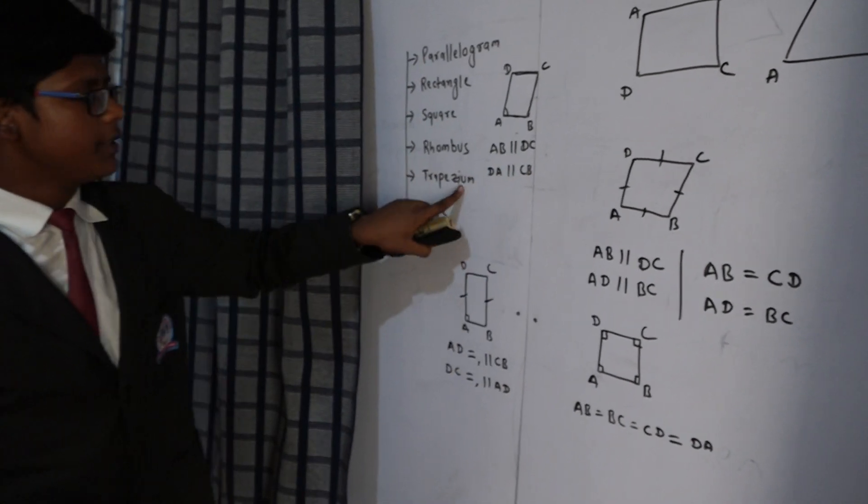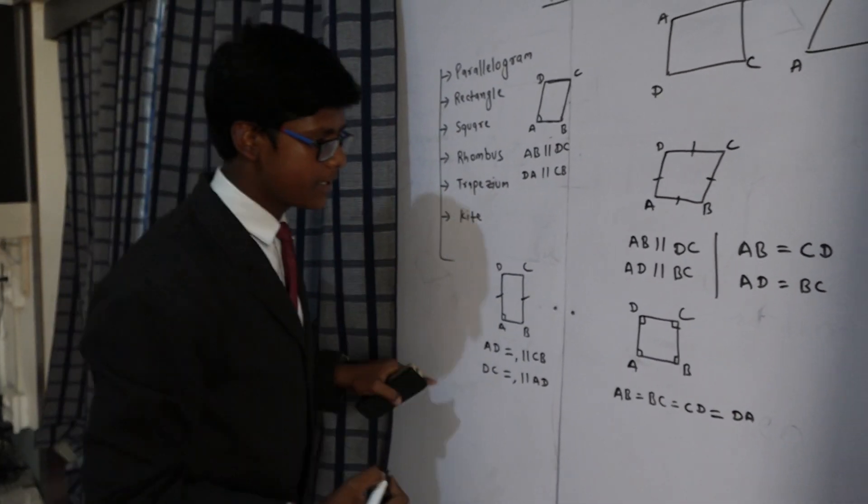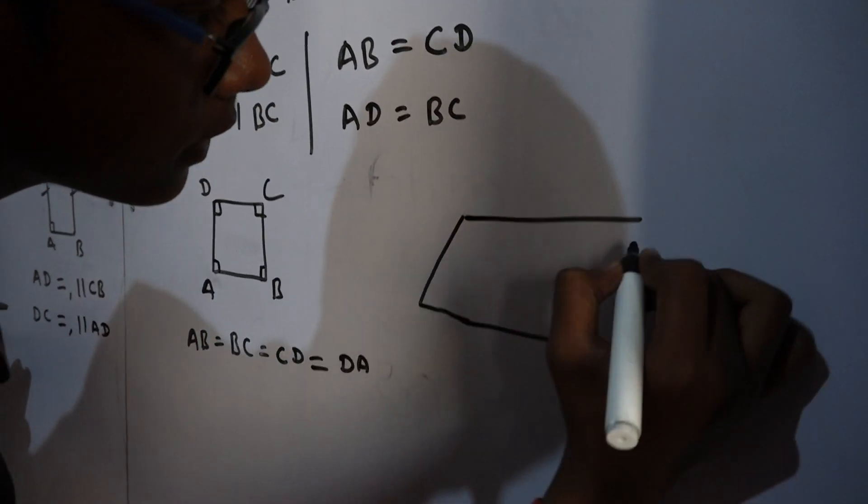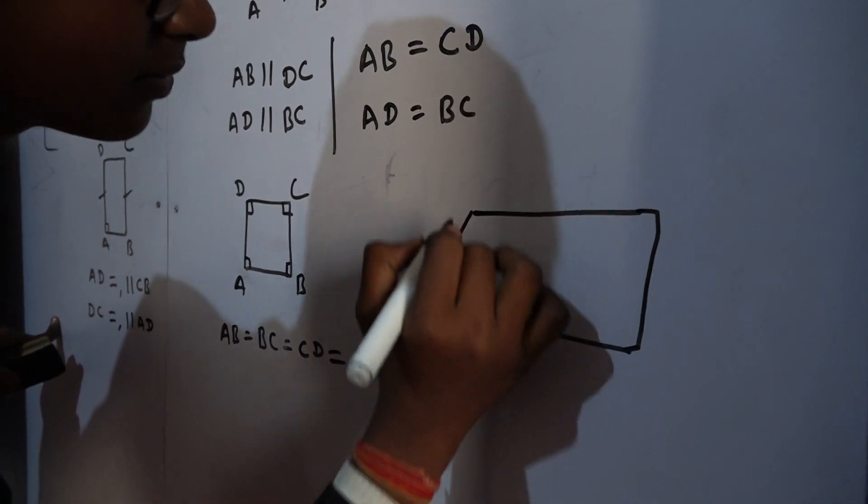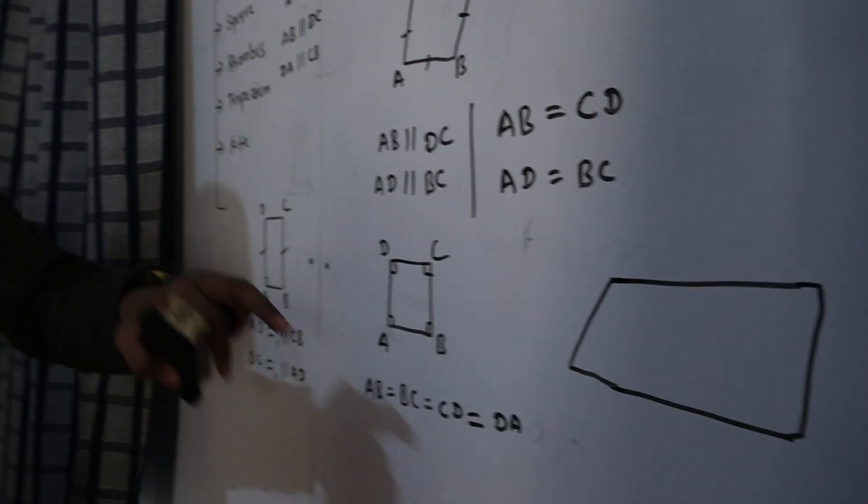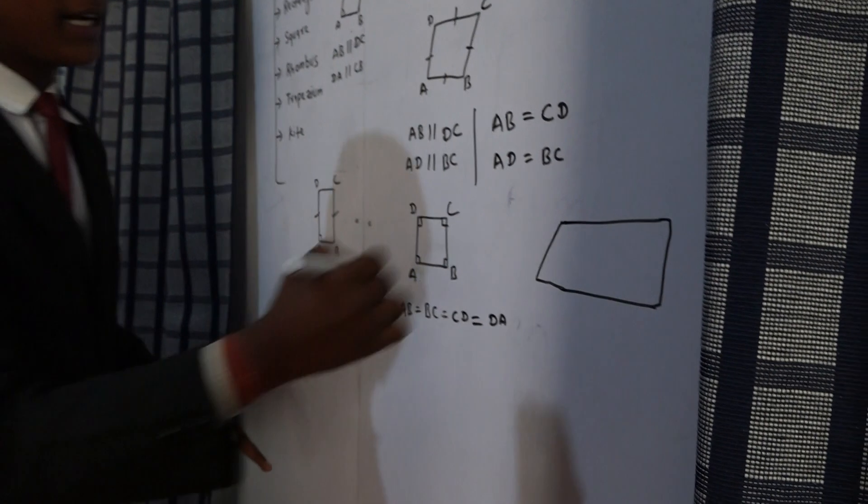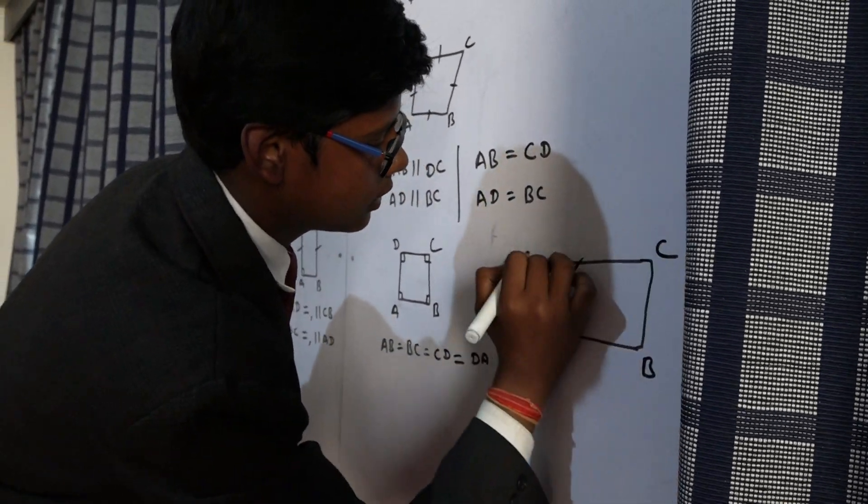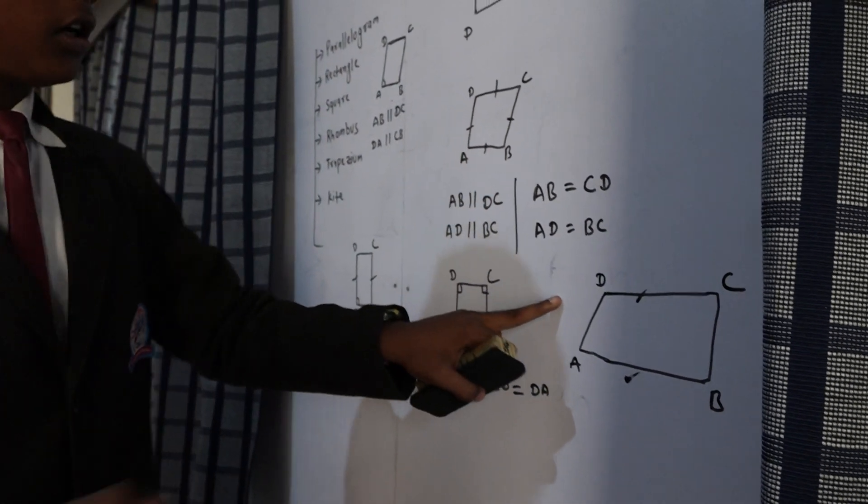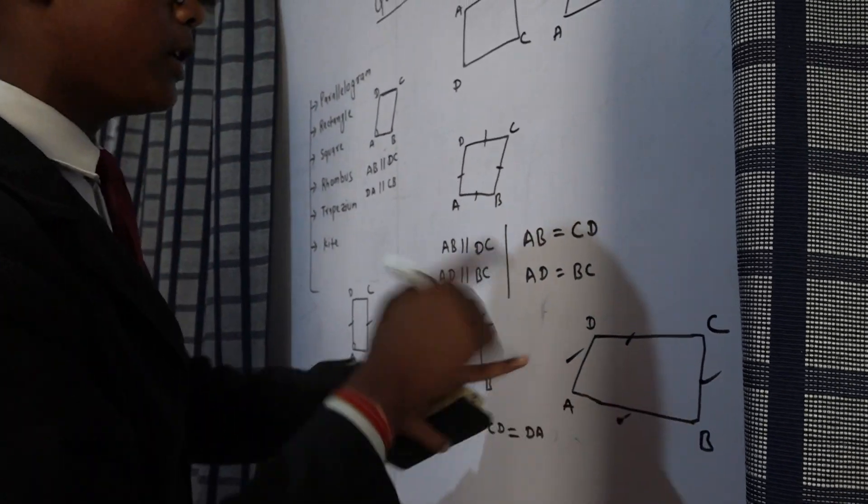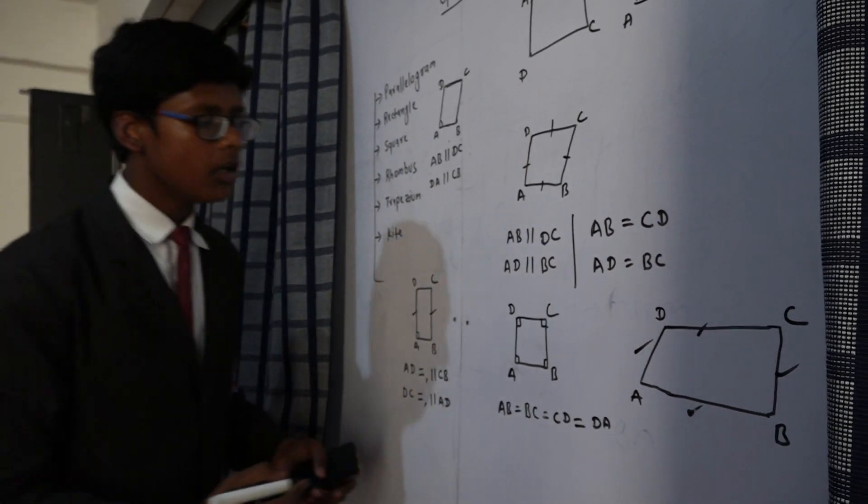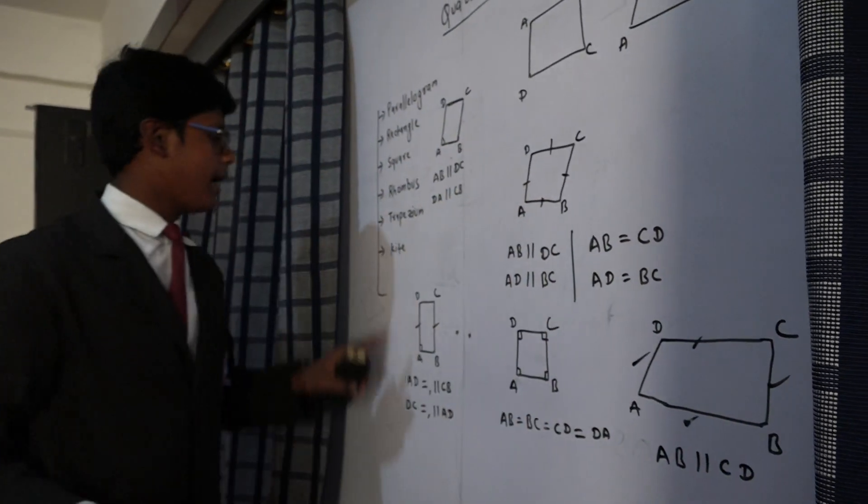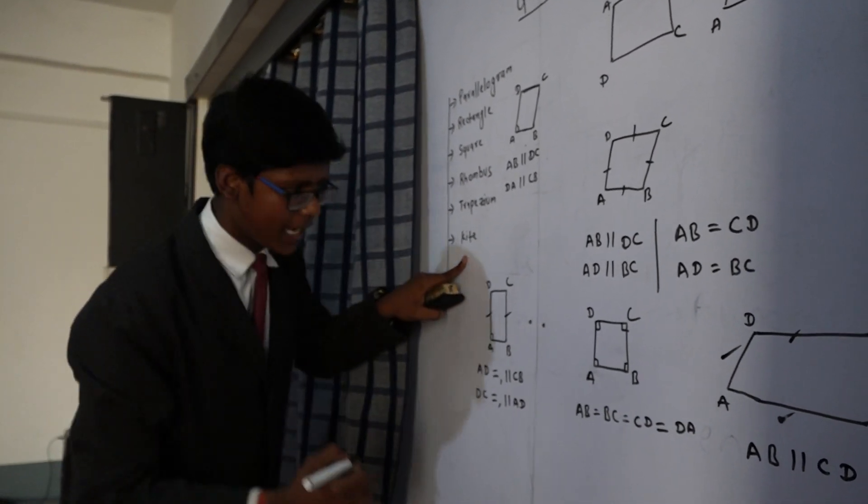Now our next quadrilateral is trapezium. This is that quadrilateral that consists of two parallel sides, two opposite parallel sides. But these opposite two parallel sides may or may not be equal. And our next quadrilateral is kite.